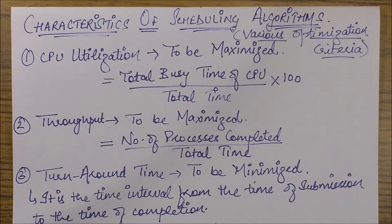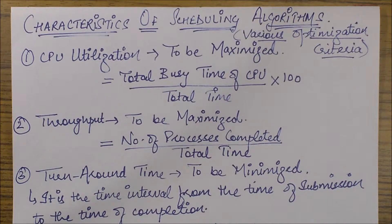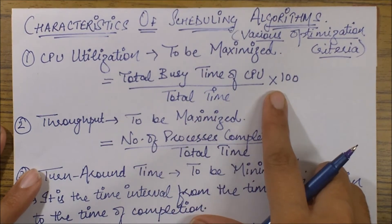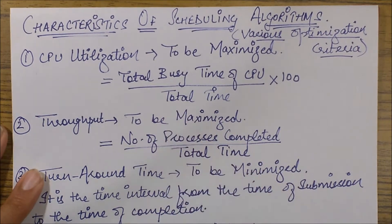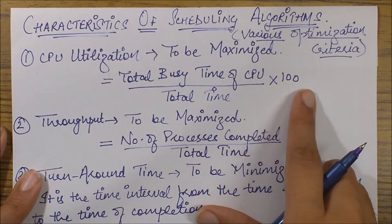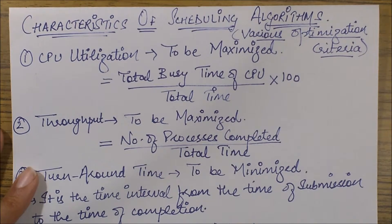So let's study them. First of all, we have CPU utilization. As we said, the two primary goals of any scheduling algorithm are maximum resource utilization and minimum process waiting time. The first optimization criterion is CPU utilization — it needs to be maximized. It is defined as the total busy time of the CPU divided by the total time of the CPU, which includes both busy and idle time. This is also sometimes expressed as a percentage by multiplying with 100.